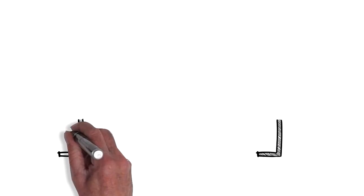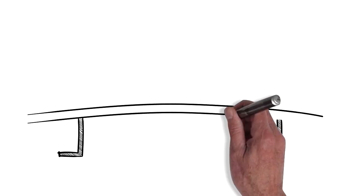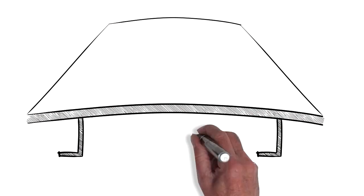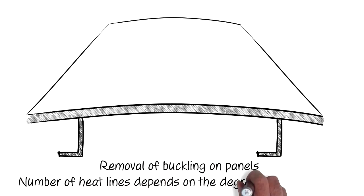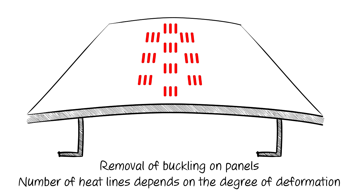This diagram shows a pattern of heat lines that can be applied within the field of the panel. The number and position of heat lines is dependent on the severity of distortion within the panel. The greater the straightening effect required, the more heat lines should be applied.